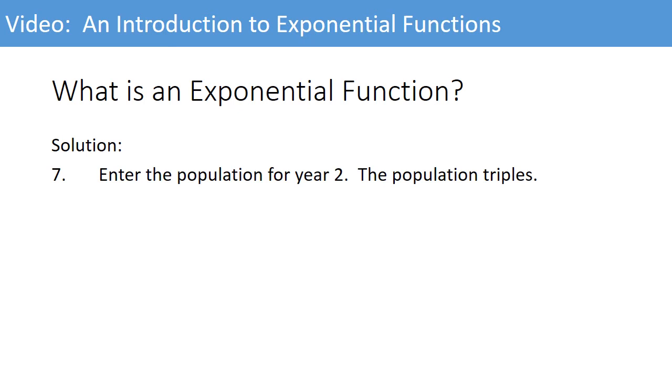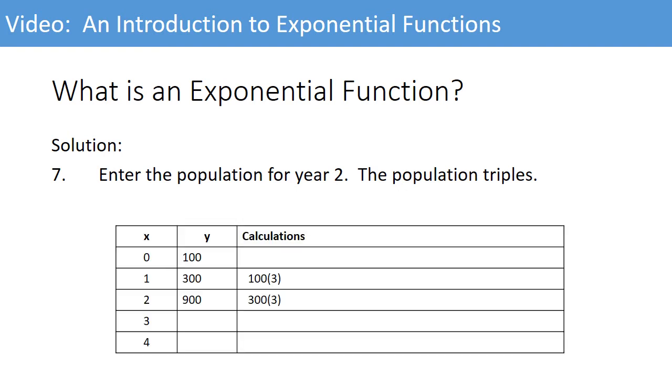Number seven: Enter the population for year two. Keep in mind, every year, the population triples. So in year one, we had 300. If 300 triples, we have 900, which we get from the calculation, 300 times three.